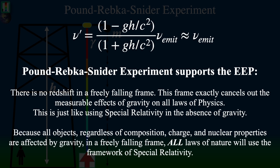All objects in the freely falling frame, regardless of their composition or charge or nuclear properties, are all unaffected by gravity. All laws of nature will use the framework of special relativity in this freely falling frame. Special relativity is the kinematic framework that is known to be extremely accurate when you have no gravity. In sum, Pound-Rebka-Snyder showed that you can't tell the difference between floating deep in space with no discernible gravity and falling in a uniform gravitational field.